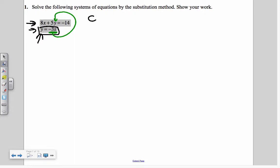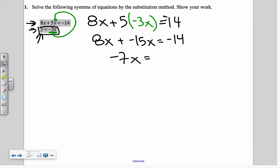So the new first equation becomes 8x plus 5. Now I take the negative 3x and put it in for the y equals negative 14. So now I am only left with x's. So now I can solve using that third step, I can solve for x. So now I'm going to go 8x plus negative 15x equals negative 14. I'm going to combine these because they're on the same side. And now I'm going to divide by negative 7 and x is going to be 2.